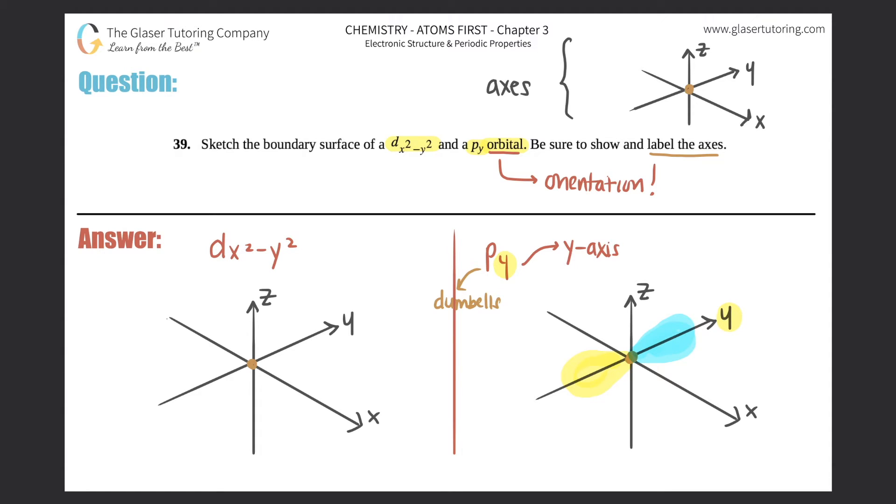And we represent them as two different colors because one is technically in the positive direction and one is in the negative direction. So that's why we always list two sides as two different colors. And that would be the answer for this one. So py, they just told us draw it in the y direction, it's a dumbbell or you could see the two balloons, but that's it.